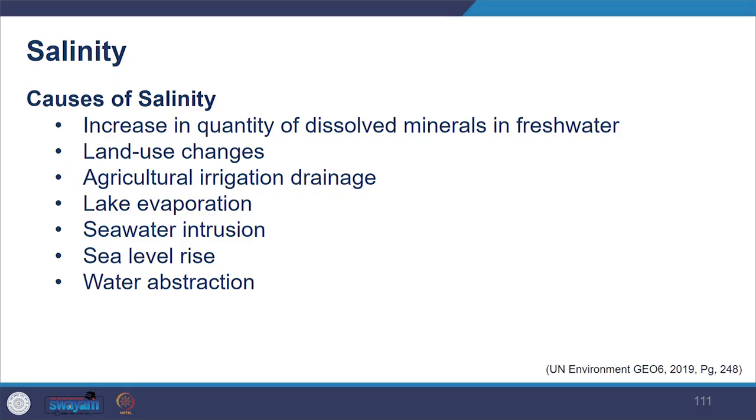Another component of water quality is salinity. Salinity happens due to an increase in the quantity of dissolved minerals in fresh water from land use change, agricultural irrigation drainage, lake evaporation, seawater intrusion, sea level rise and water abstraction. If excess salinity occurs, the water is unsuitable for human consumption, and many plants and organisms have limited tolerance to salinity. Salinity problems prevail in Africa, Asia-Pacific and Latin America and have been increasing because of industrial water use. Saline water intrusion into coastal aquifers can result from over-abstraction, mismanagement and sea level rise, impacting both environmental quality and food security.